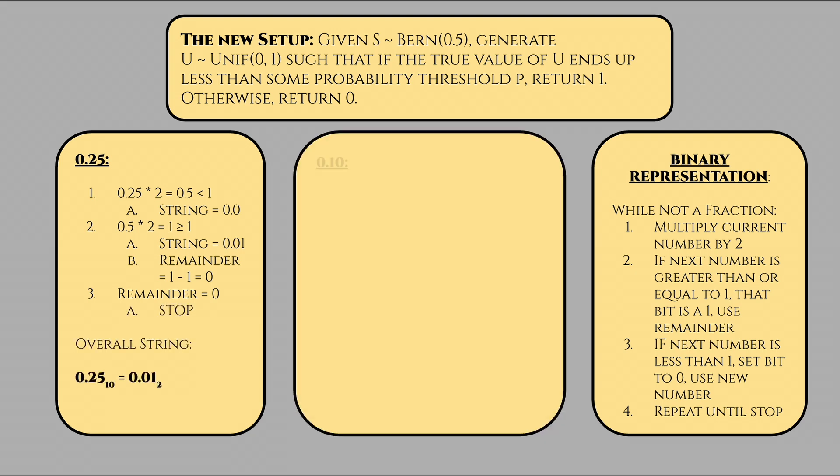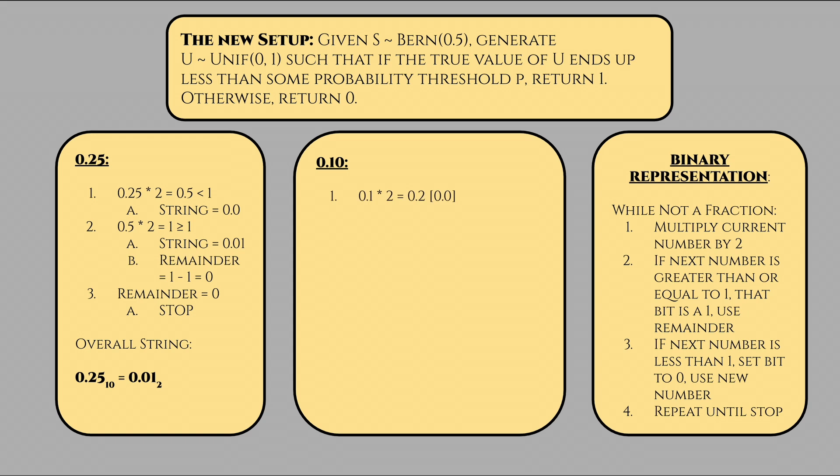For 1 over 10, it's slightly more complicated. Step 1, we have 0.1 times 2, which is 0.2, which is less than 1, so the first bit is 0. Step 2, we take 0.2 and multiply it by 2, which is 0.4, which is also less than 1, so the second bit is 0. Step 3, we do the same thing to get 0.8, which is also less than 1, so the third bit is 0. Step 4, we have 0.8 times 2, which is 1.6, which is greater than or equal to 1, so the fourth bit is 1. We now use 1.6 minus 1, which is 0.6. For step 5, we take that 0.6, multiply it by 2 to get 1.2, which is greater than or equal to 1, so the fifth bit is 1. We now use 1.2 minus 1, which is 0.2. For step 6, we'll notice that we're back at step 2, so the pattern repeats, and our binary representation of 1 tenth is 0.000110011, etc.